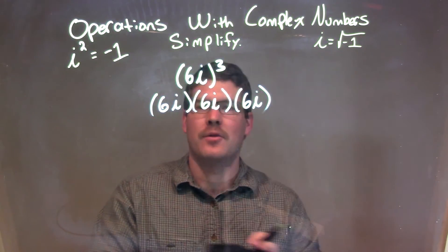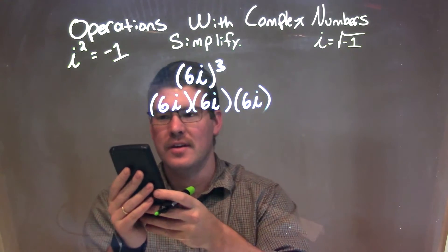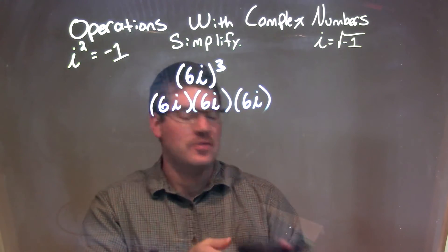6 times 6 times 6, 6 to the third, 6 times 36, which is 216.